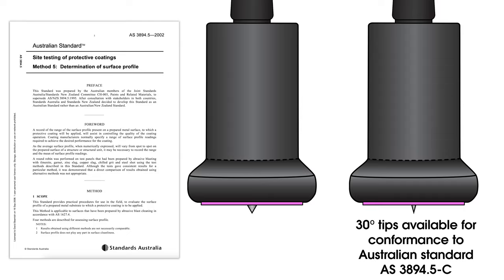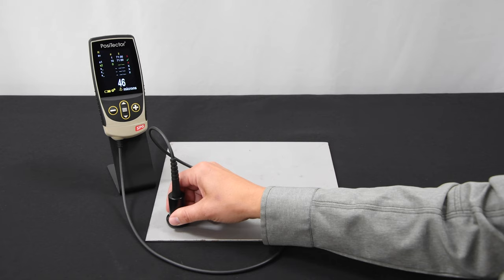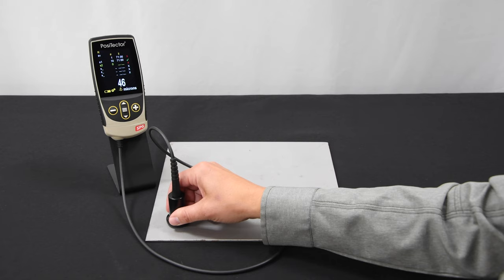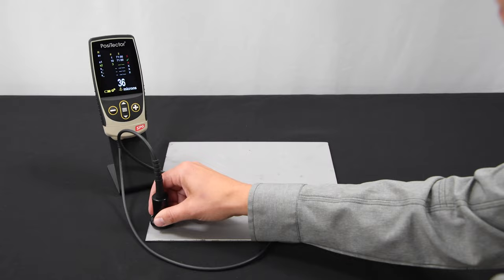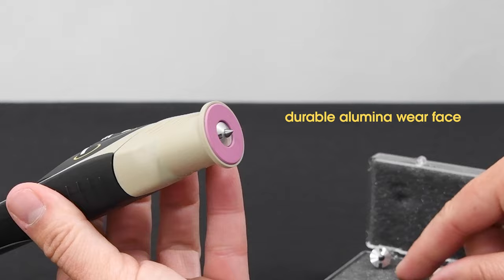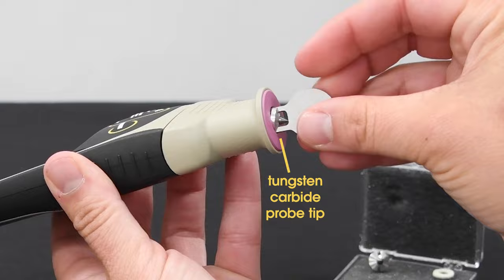Models with a 30-degree probe tip are available for compliance with Australian standards. A fast measurement rate of over 50 readings per minute makes it ideal for quickly measuring surface profile over large areas. All probes feature a durable alumina-wear face and field-replaceable tungsten carbide probe tips for long life and continuous accuracy.